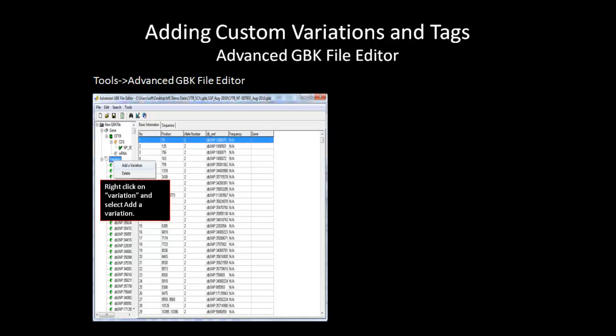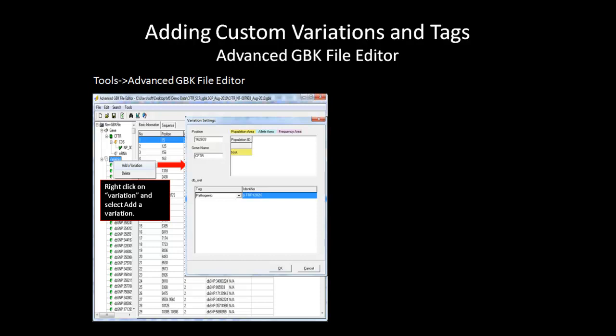After accessing the Advanced GBK File Editor and importing a GenBank file of interest, you can add additional custom variations and tags to the GenBank file. To add a variation, right-click on the variation in the browser pane and select Add a Variation. This will bring up the Variation Settings dialog box. In this window, you will first input the position of the expected variation and the gene name. Then, you can add a tag by using the drop-down menu to assign one to the variation. After assigning the tag, you can also add an identifier to the variation that will appear in the comment box if the variation is detected in the samples.